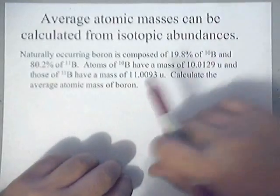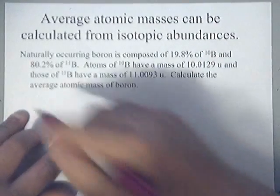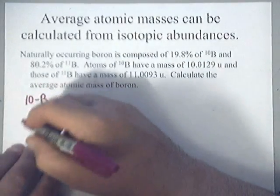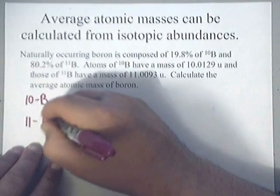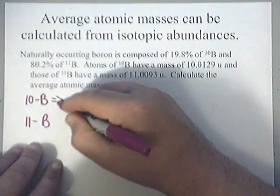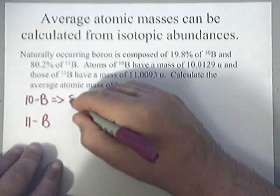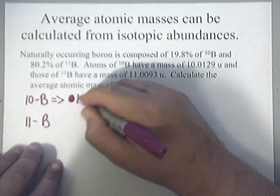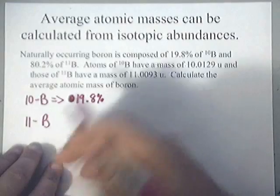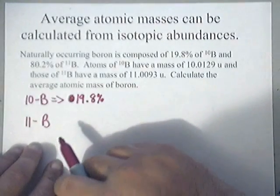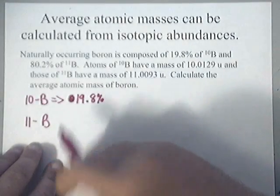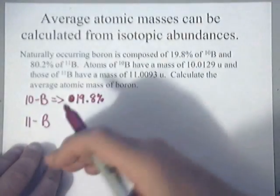We have two isotopes that are given to us, and those two isotopes are boron-10 and boron-11. Now, they tell us that the boron-10 is in 19.8% abundance. That means that of the element boron that's made up of the two isotopes, boron-10, boron-11, 19.8% of it is the boron-10 isotope.